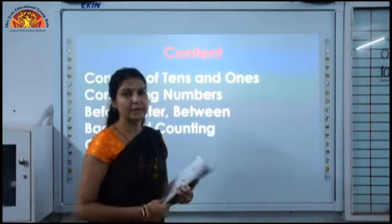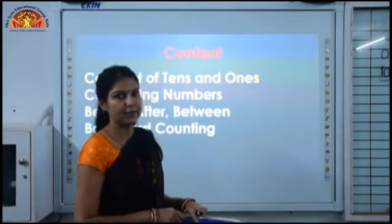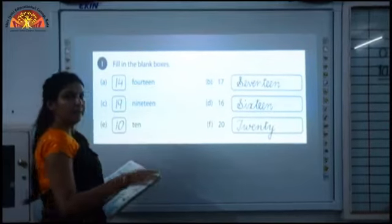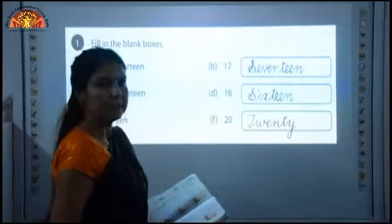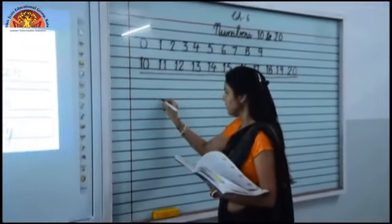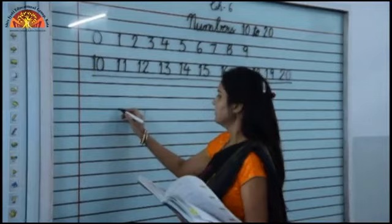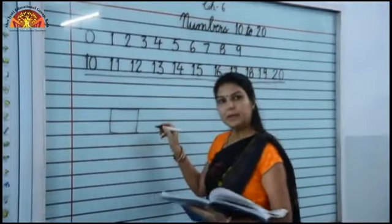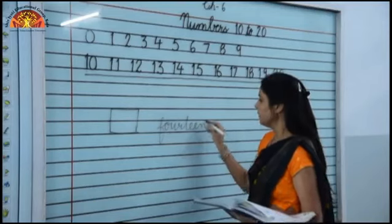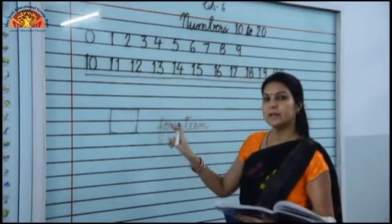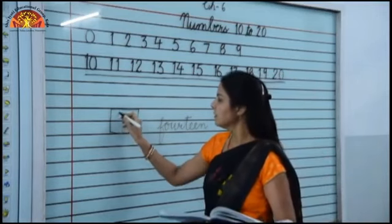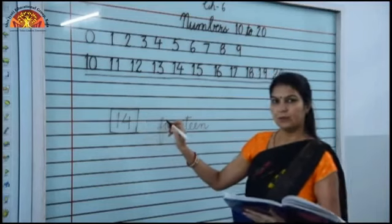Question number 1, we will see in this chapter on page number 75. Fill in the blank boxes. Children, blank boxes are given here and you have to fill these boxes. Let's move to the board. First, the box is blank and the number name written is F-O-U-R-T-E-E-N, 14. You have to write the number for this given number name. We will write 14 as 1 and 4. This is called 14. I hope you have understood.